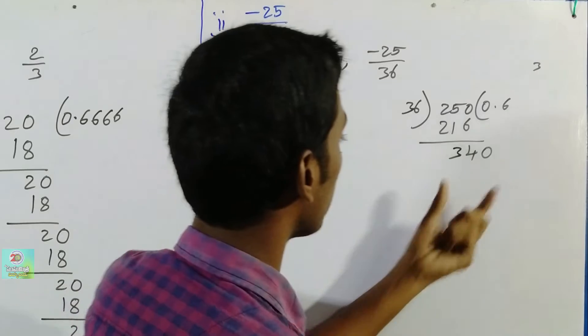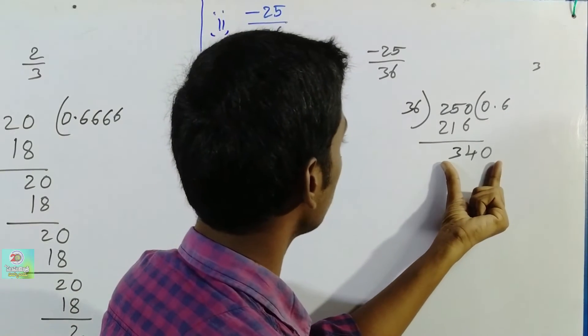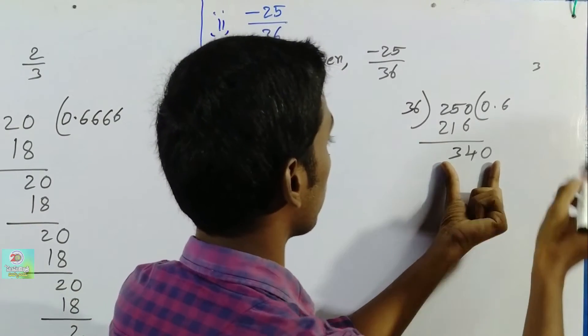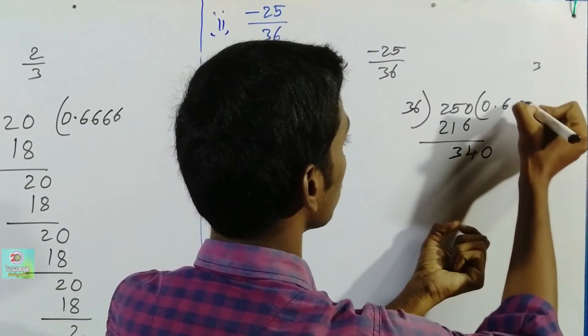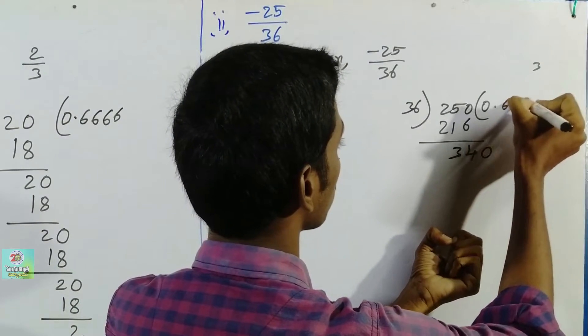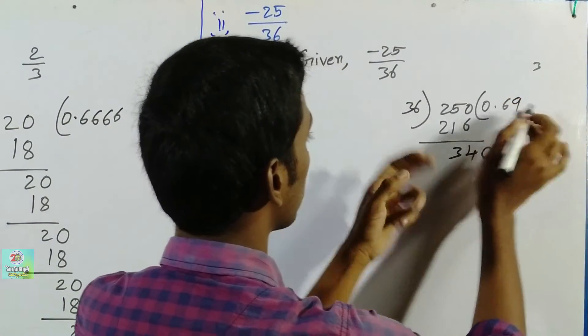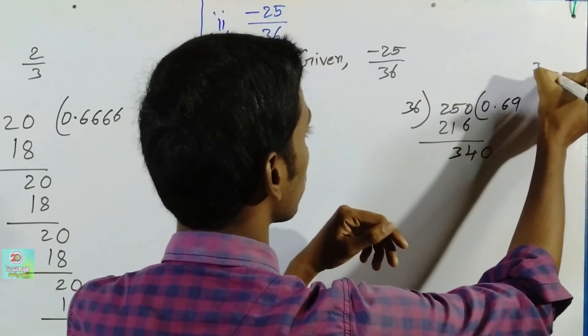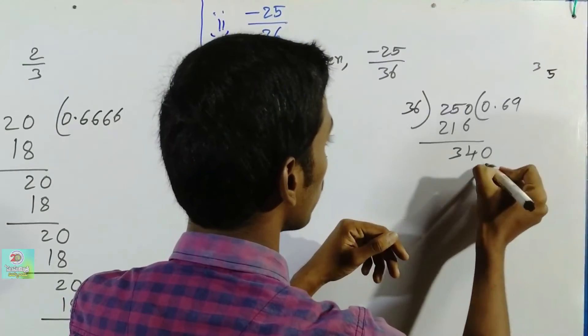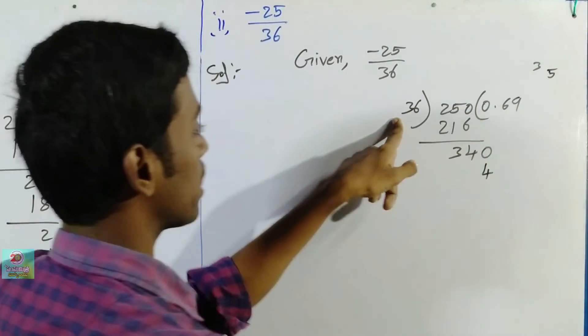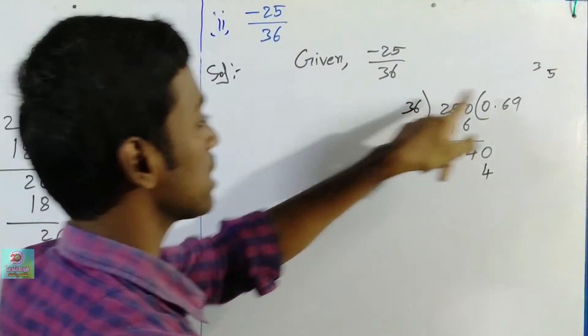Now we will work on the next problem. Using 9 times: 9×6=54, 9×5=45, 9×4=36, remainder 27. Continuing the long division process with remainders.